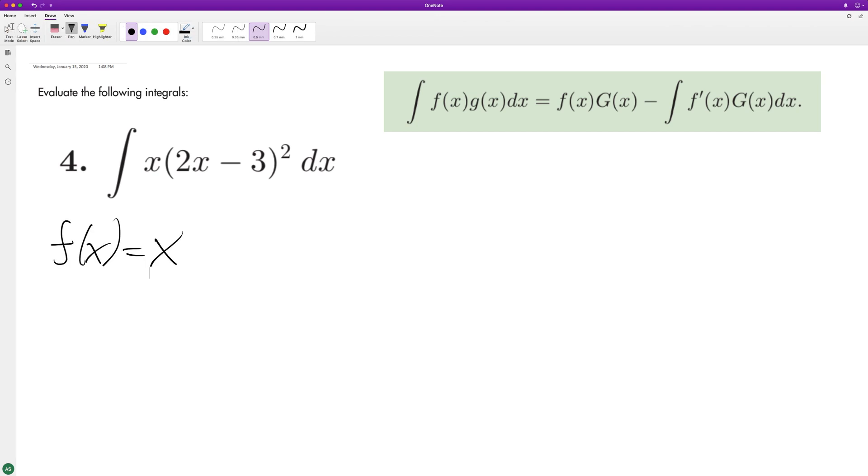We'll just pick variables how we want to break this up, and g of x will be assigned to be 2x minus 3 squared.